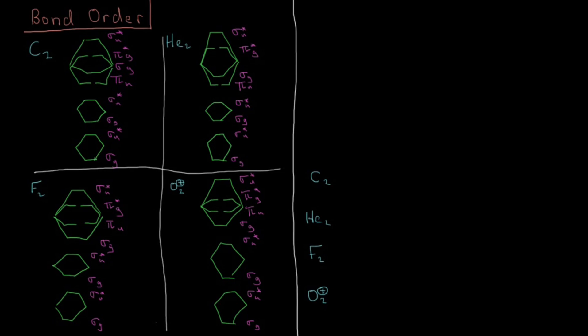Now that we have these molecular orbital diagrams and electron configurations for these homonuclear diatomic molecules, we can use these to define a qualitative metric called the bond order, which is going to tell us basically about our intuition regarding covalent bonds and how many covalent bonds there are between the two atoms in this given homonuclear diatomic.